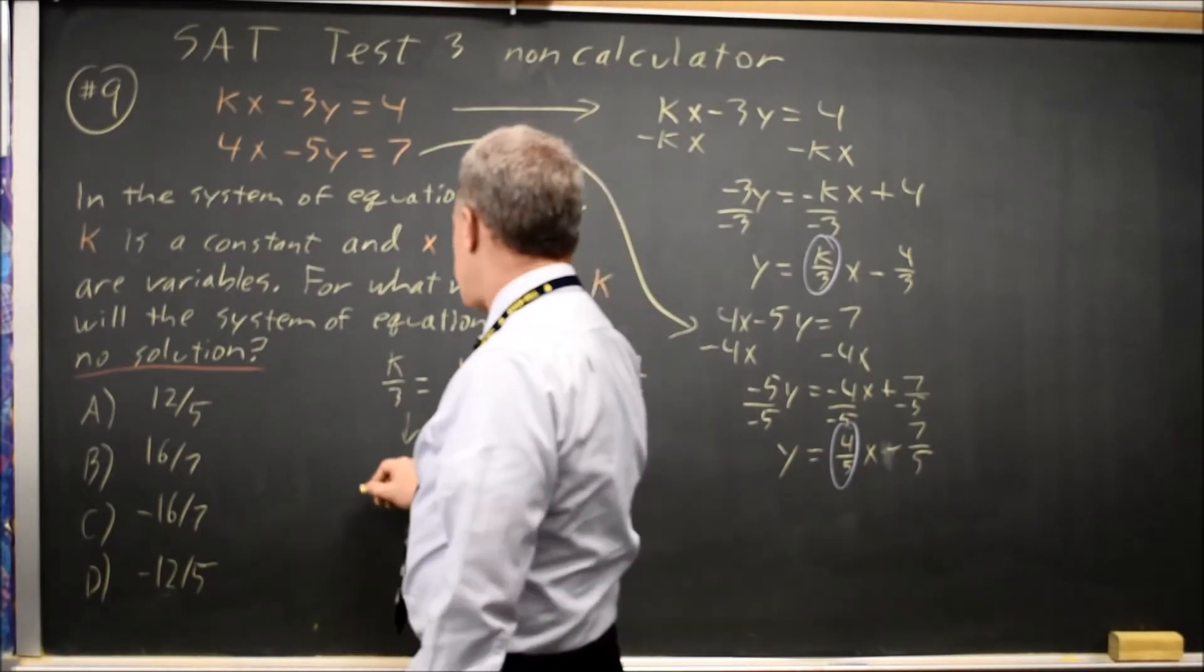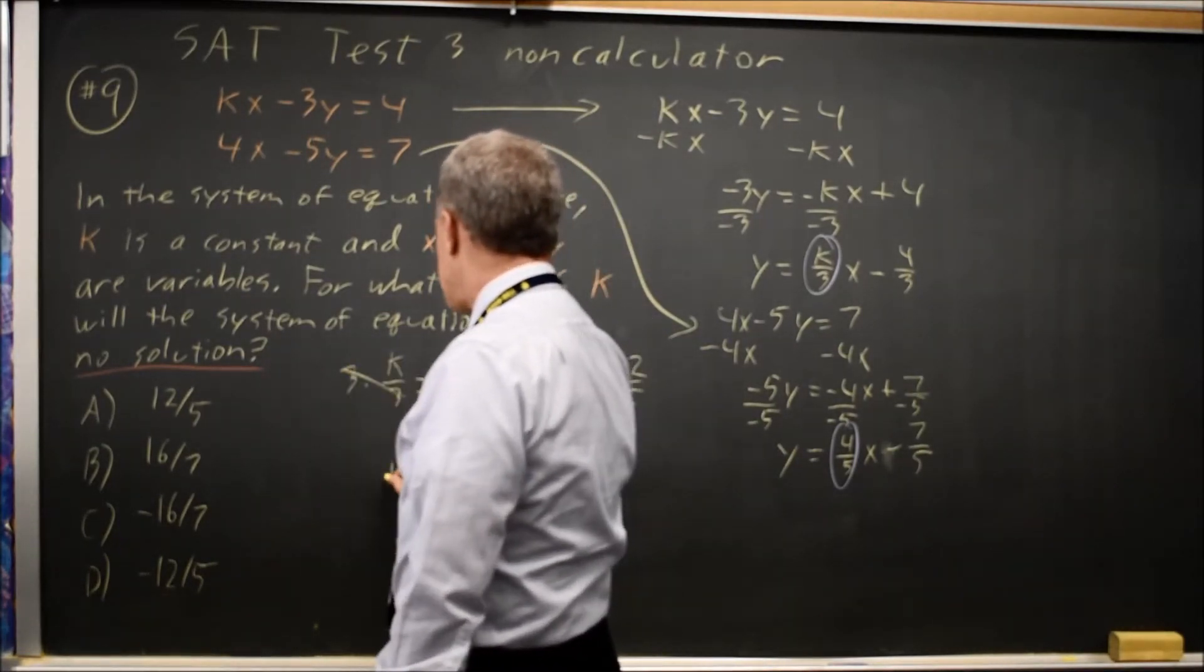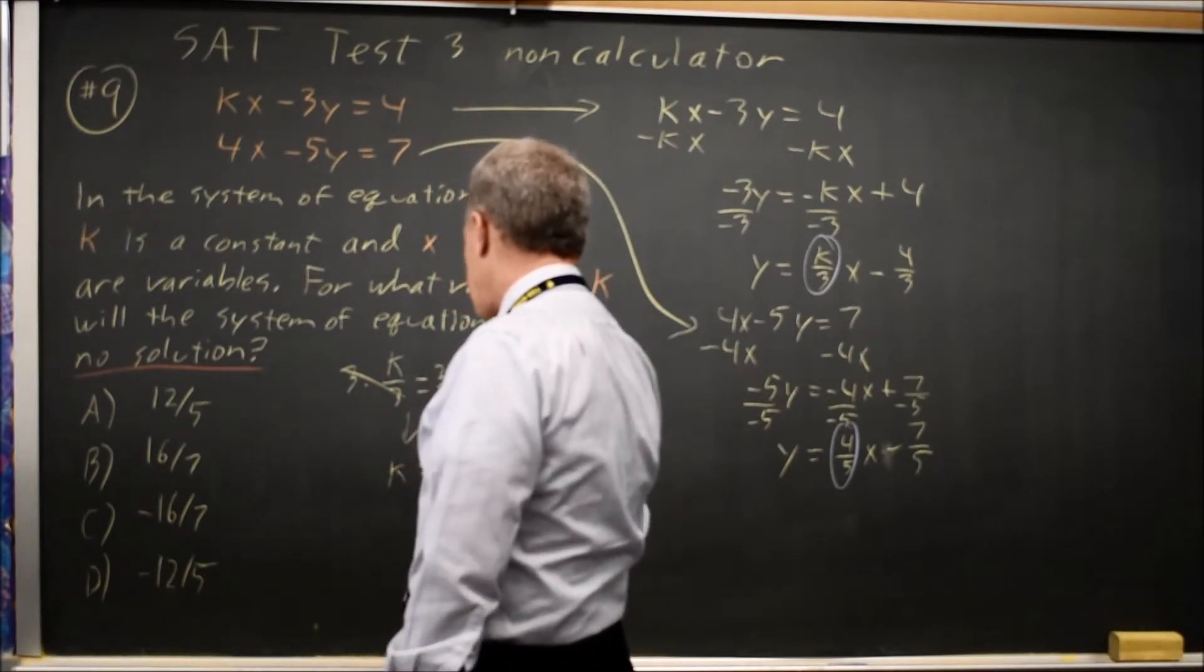Or I could just multiply both sides by 3. 3 over 3 is 1. So k equals 3 times 4 is 12 over 5.